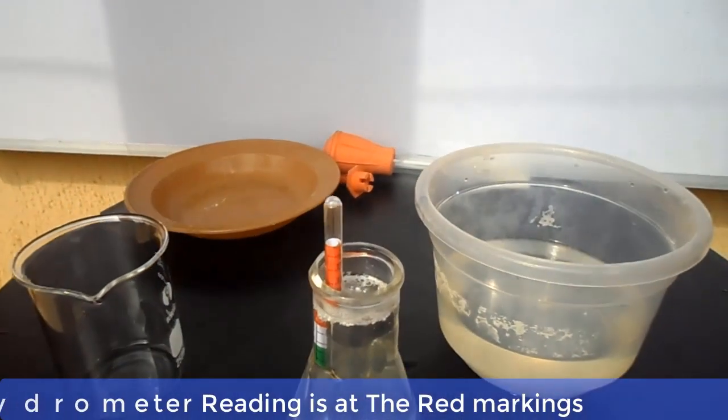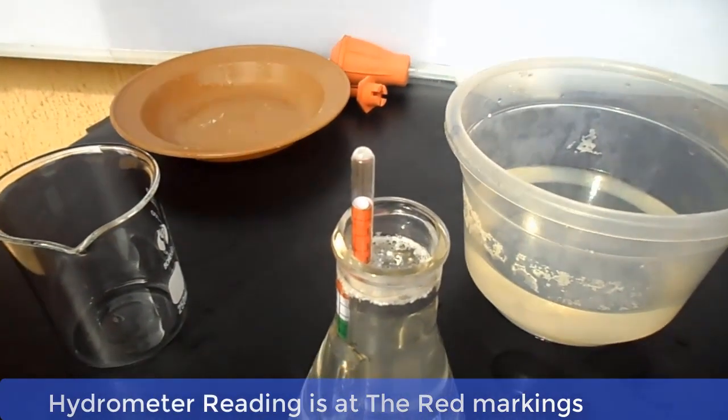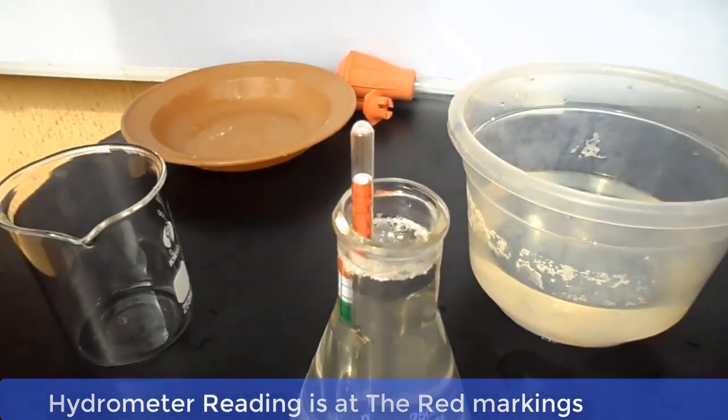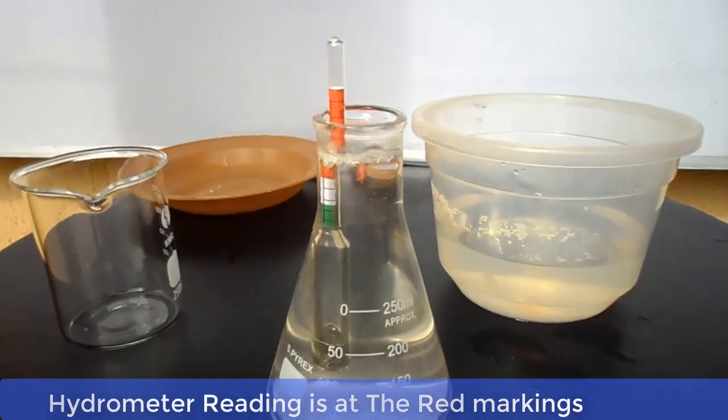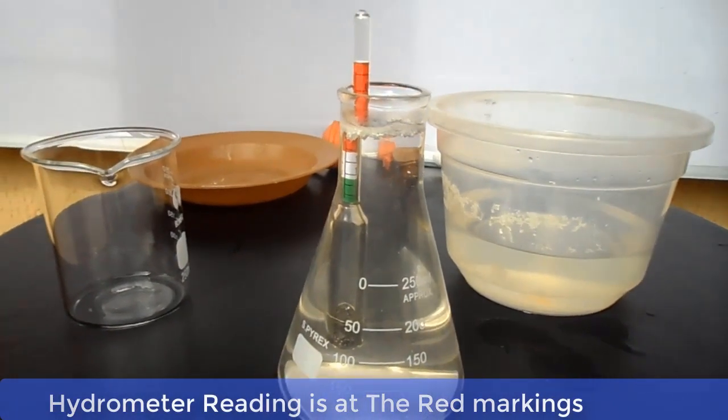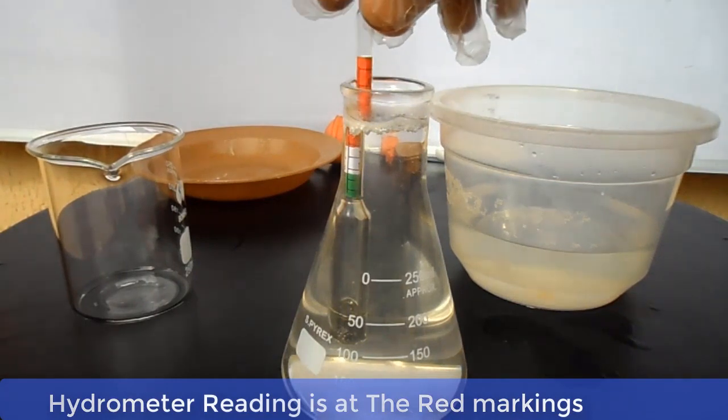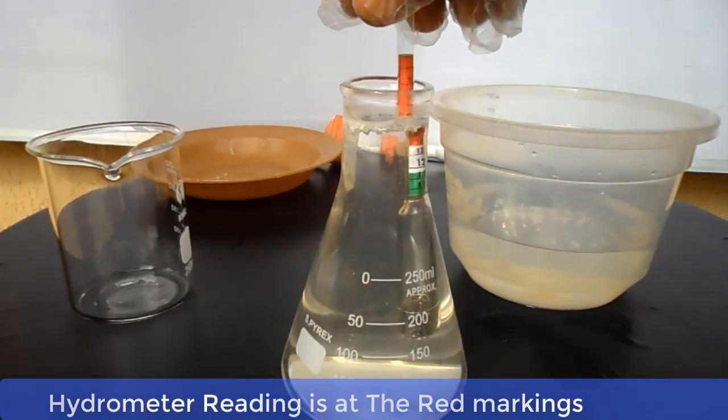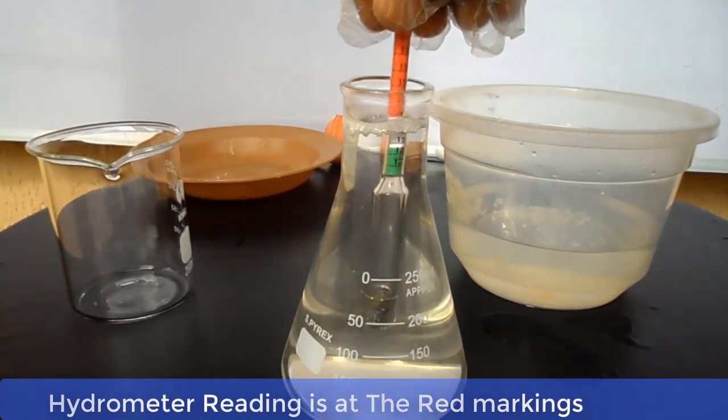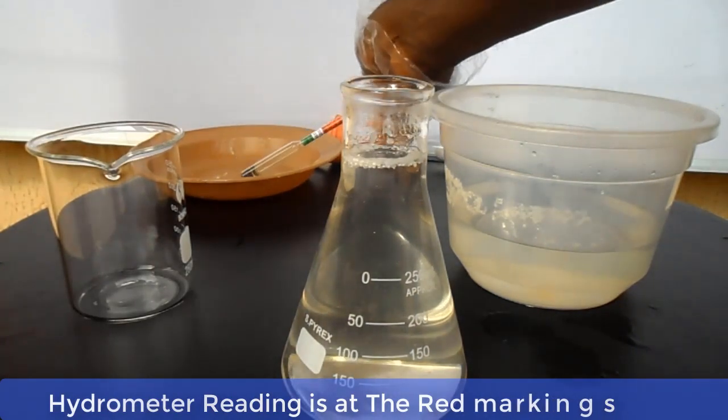As you can see, the hydrometer reading is at the red color mark. This is an indication that the water is far more than the dissolved caustic soda. So we will add some quantity of caustic soda into the solution.